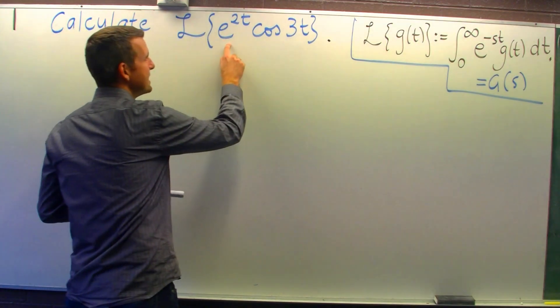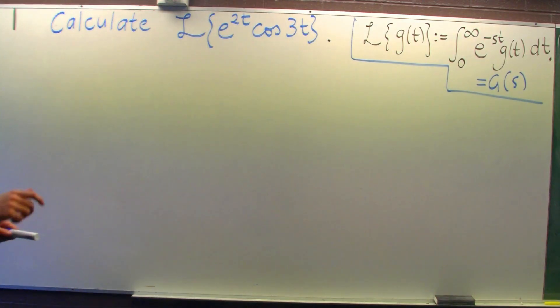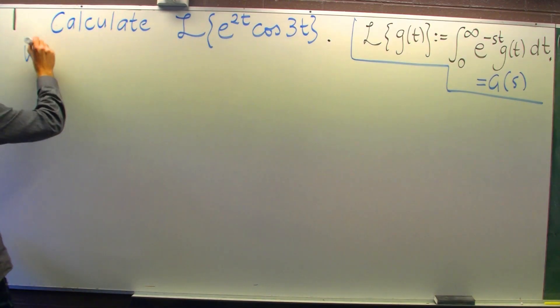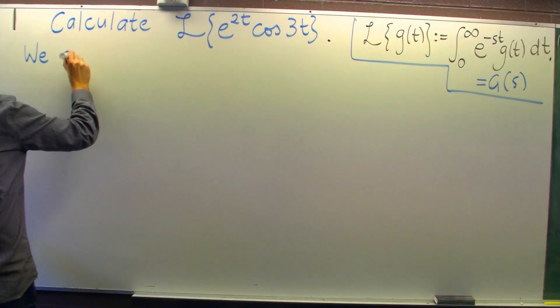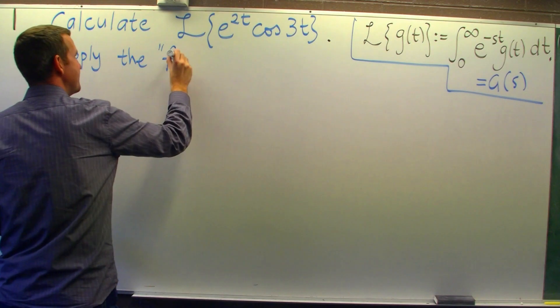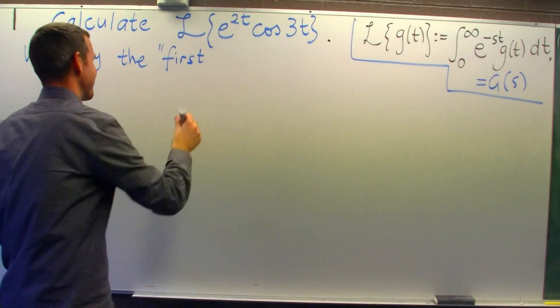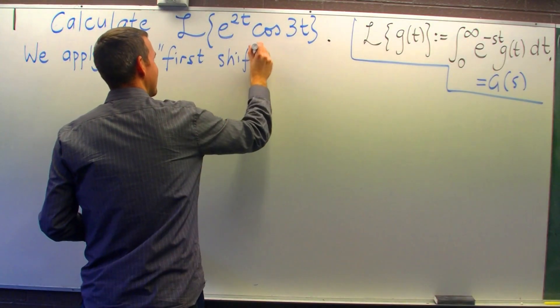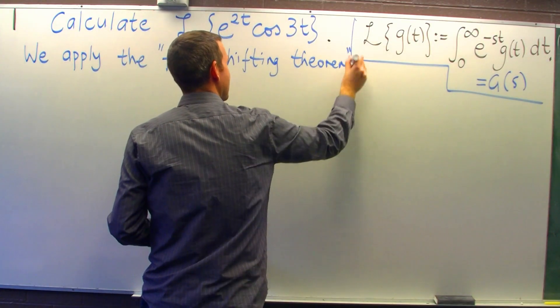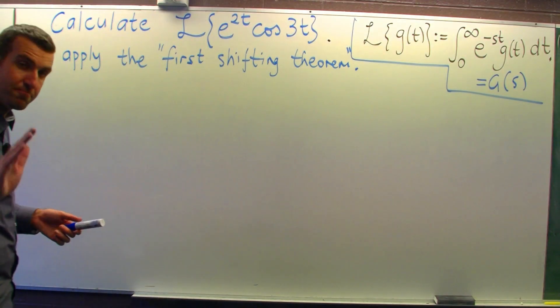Alright, so notice here that it's an exponential times a function of t. We can use that to help us out by way of the first shifting theorem. Okay, so we apply the first shifting theorem. We call it the first shifting theorem because there's two and there's a second shifting theorem. Okay, so what is the first shifting theorem? Well, glad you asked.